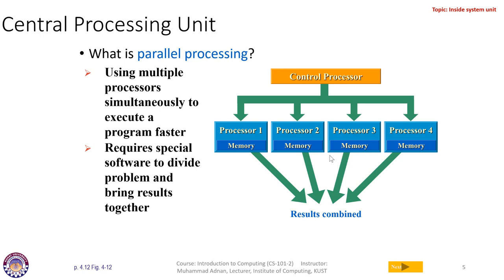Another concept related to the system unit is parallel processing, also called simultaneous or concurrent processing. It is important because in a single time duration we can do multiple jobs using multiple processors. In this scenario we have processor one, two, three, and four, plus a control processor. The control processor gets data from the input device, hard disk, or modem, then segments or divides the job into four equal parts and gives each to an individual processor, so all four work in parallel on subtasks.